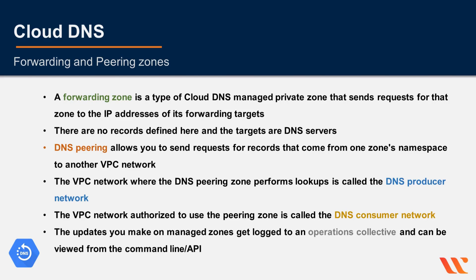DNS peering is a one-way relationship — it allows GCP resources in the DNS consumer network to look up records in the peering zone's namespace. The DNS producer and consumer networks must be GCP VPC networks. Although DNS peering and VPC network peering are different services, DNS peering can be used in conjunction with VPC network peering, but VPC network peering is not required for DNS peering. All changes and updates to managed zones are logged to an operations log that can be queried through the API or command line.